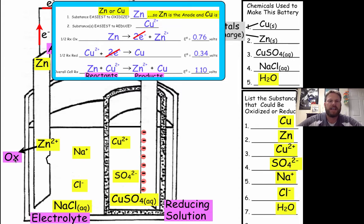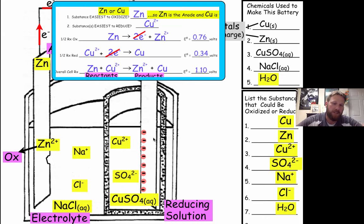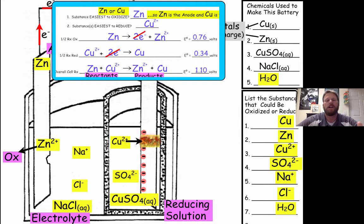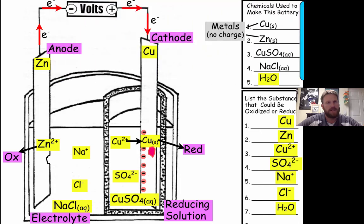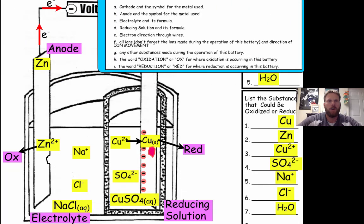Now we're going to show the process of reduction. Cu²⁺ ions are positively charged and will be attracted to the negatively charged cathode electrode. They go to the negatively charged electrode, gain two electrons, and become copper metal. That is the process of reduction — we label that 'red' for reduction.